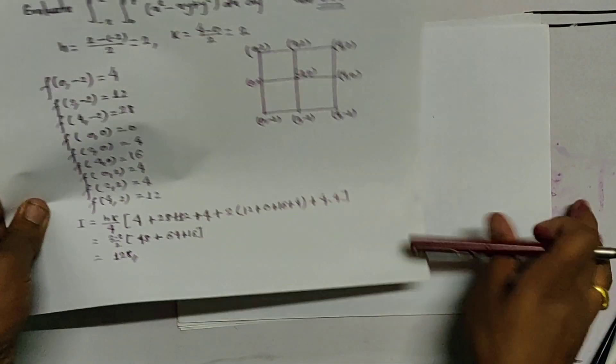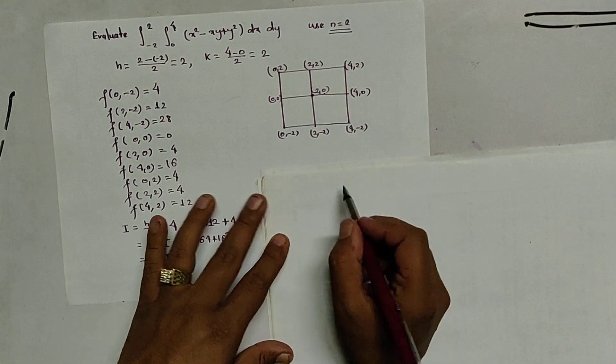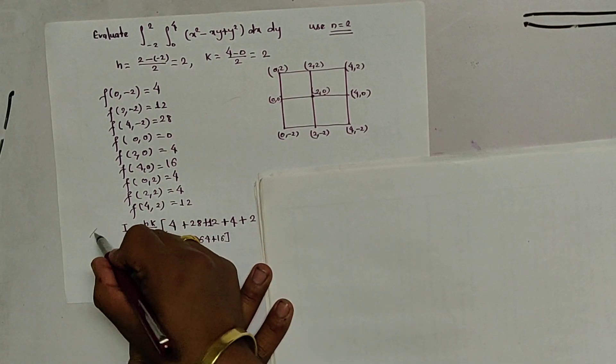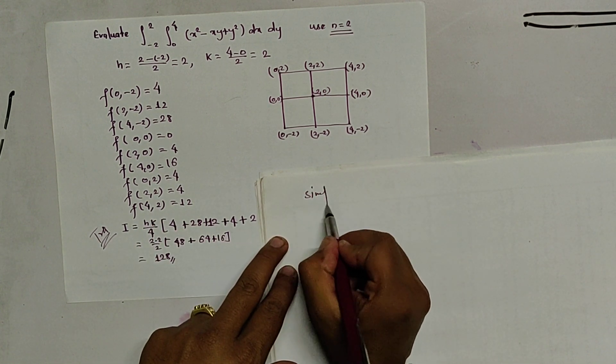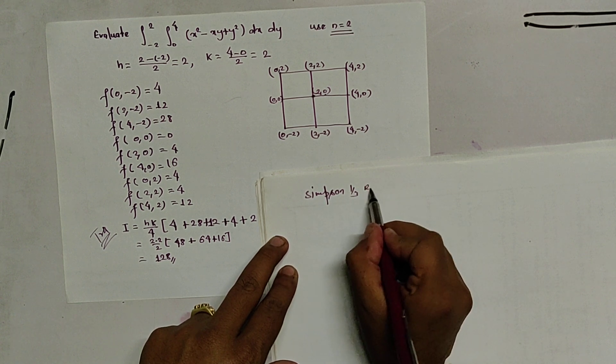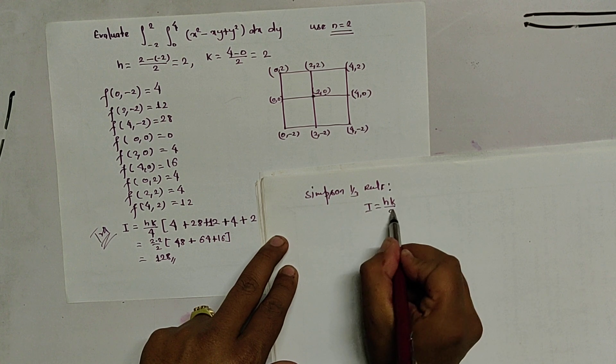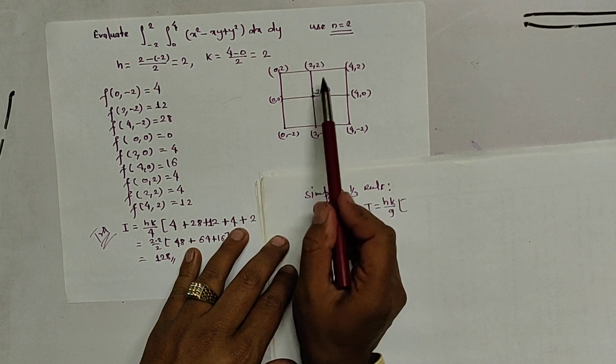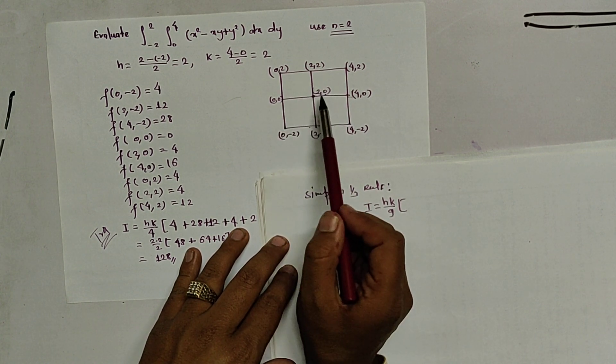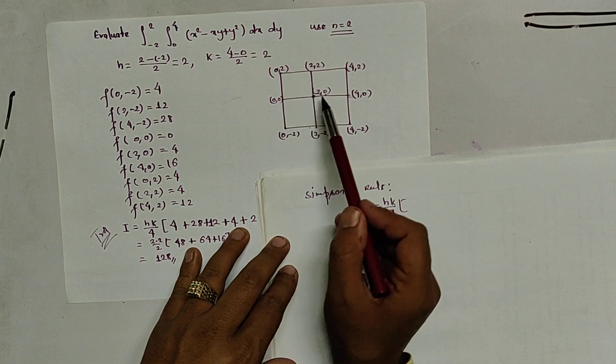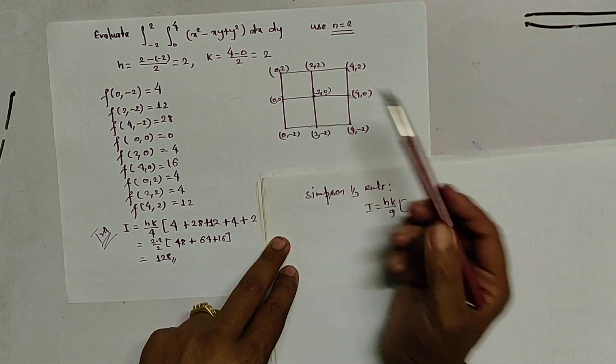Similarly, let us calculate the value of this integration by using Simpson 1 by 3 rule. This is by trapezoidal rule. And by Simpson 1 by 3 rule. In Simpson 1 by 3 rule, h k by 9, it becomes. And in Simpson 1 by 3 rule, these points are multiplied by 4s.